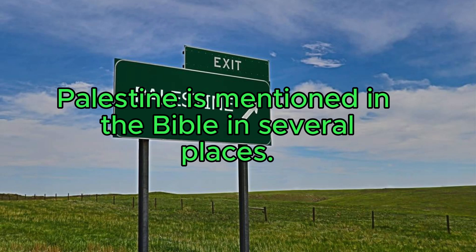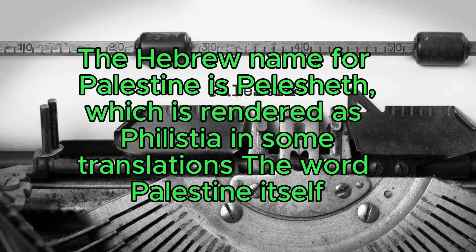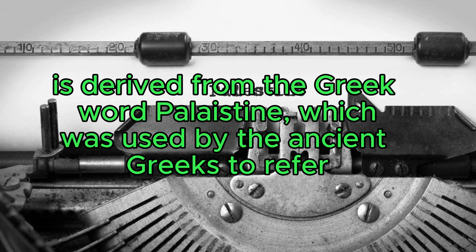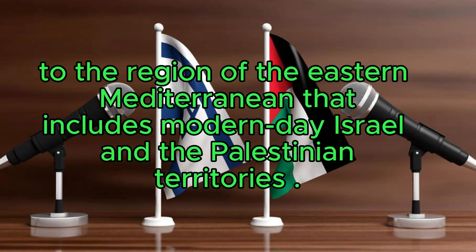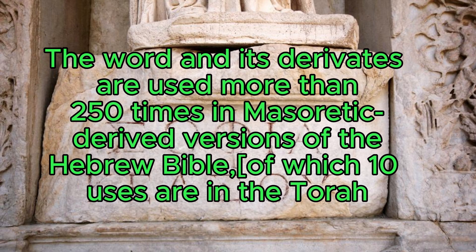Palestine is mentioned in the Bible in several places. The Hebrew name for Palestine is Pelesheth, which is rendered as Philistia in some translations. The word Palestine itself is derived from the Greek word Palaistine, which was used by the ancient Greeks to refer to the region of the eastern Mediterranean that includes modern-day Israel and the Palestinian territories. The word and its derivatives are used more than 250 times in Masoretic-derived versions of the Hebrew Bible, of which ten uses are in the Torah.